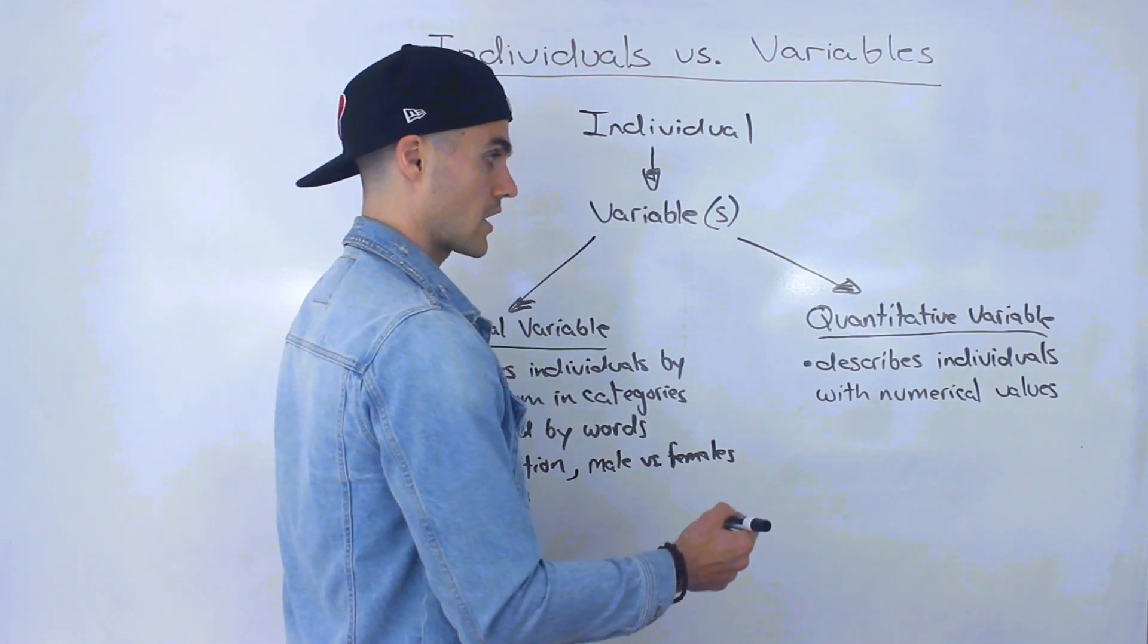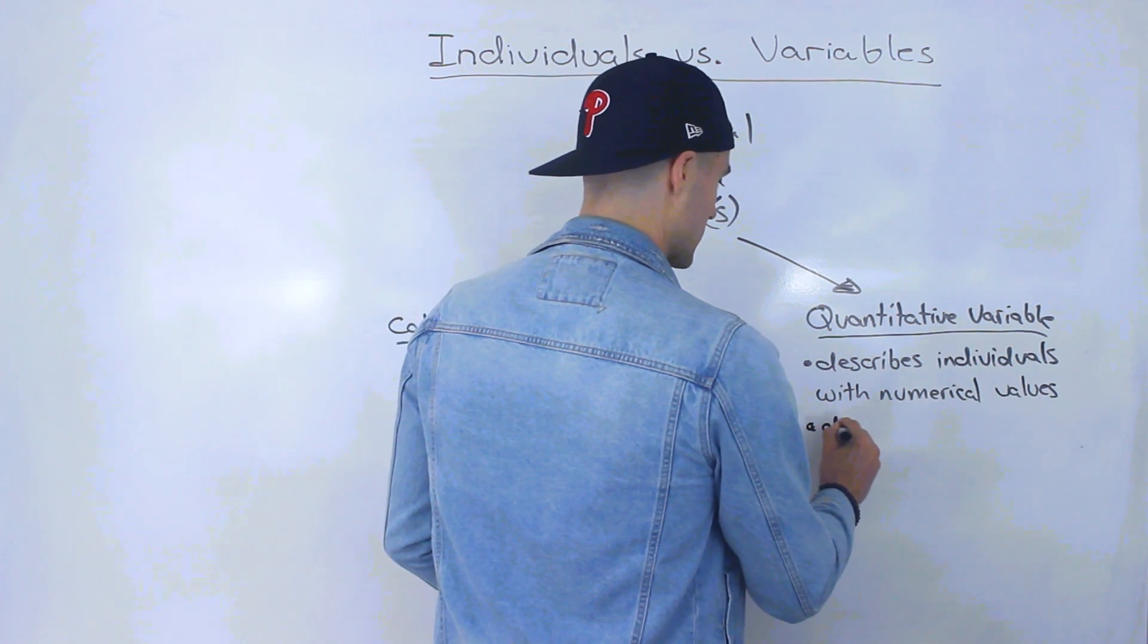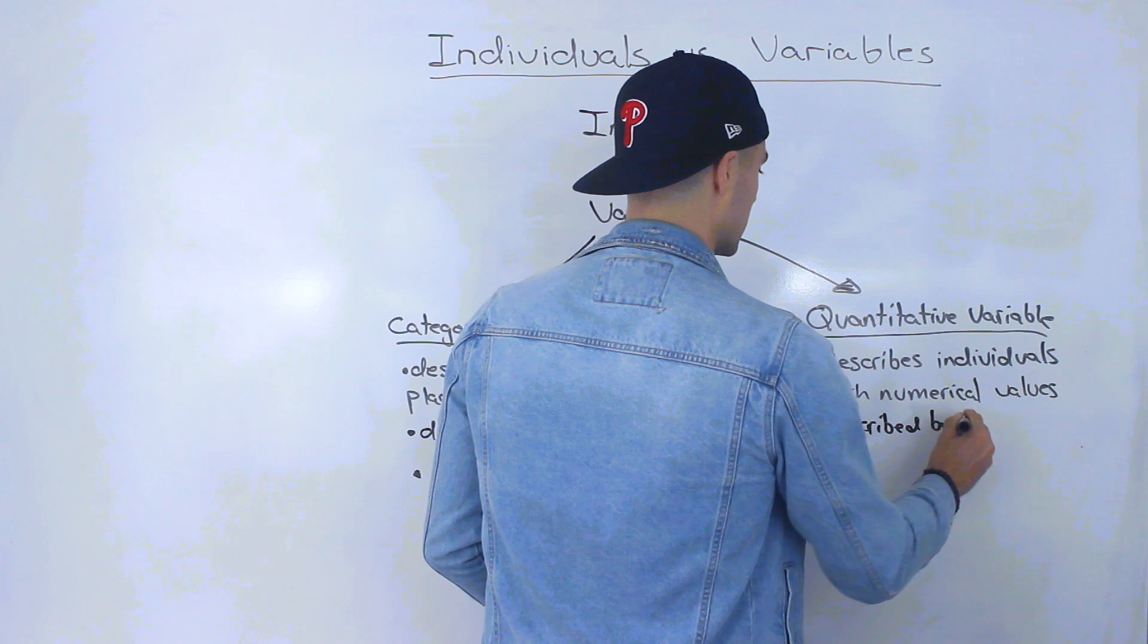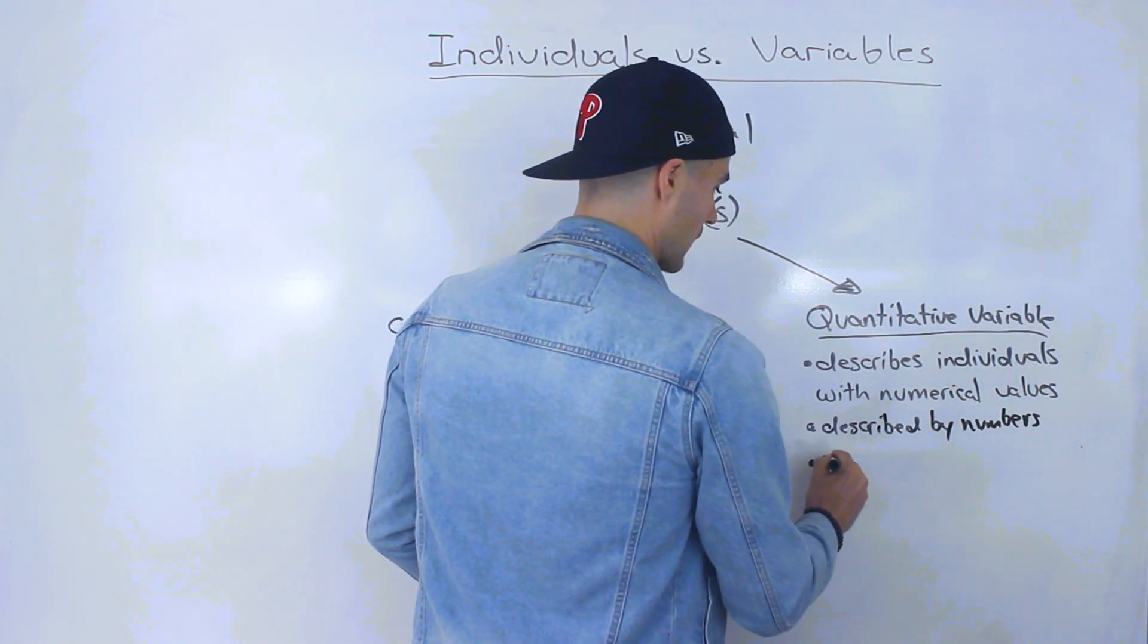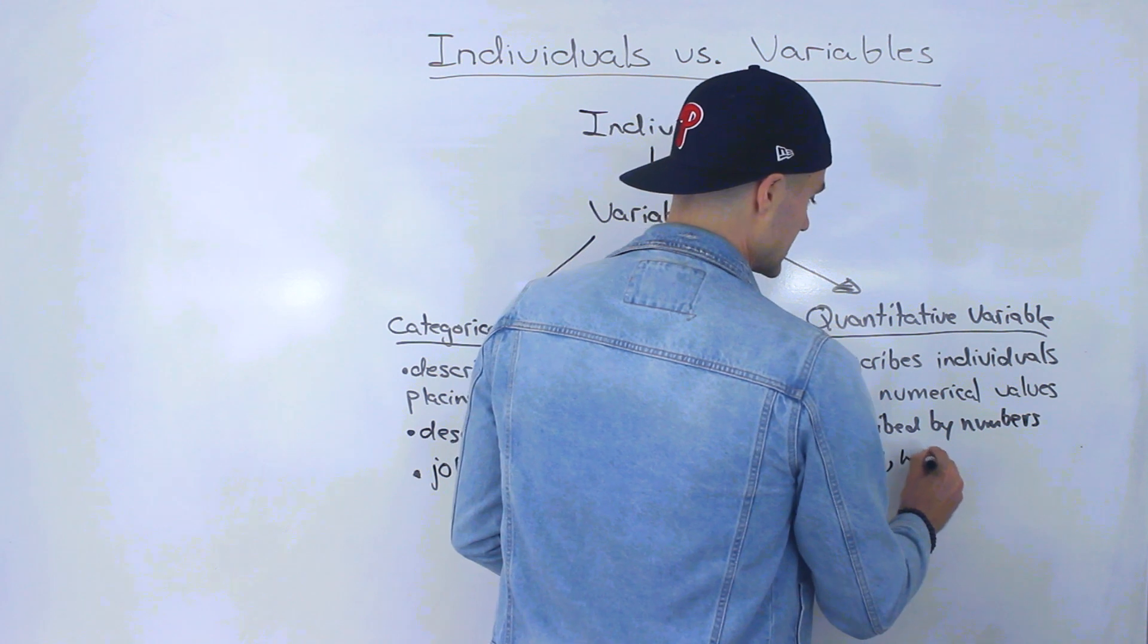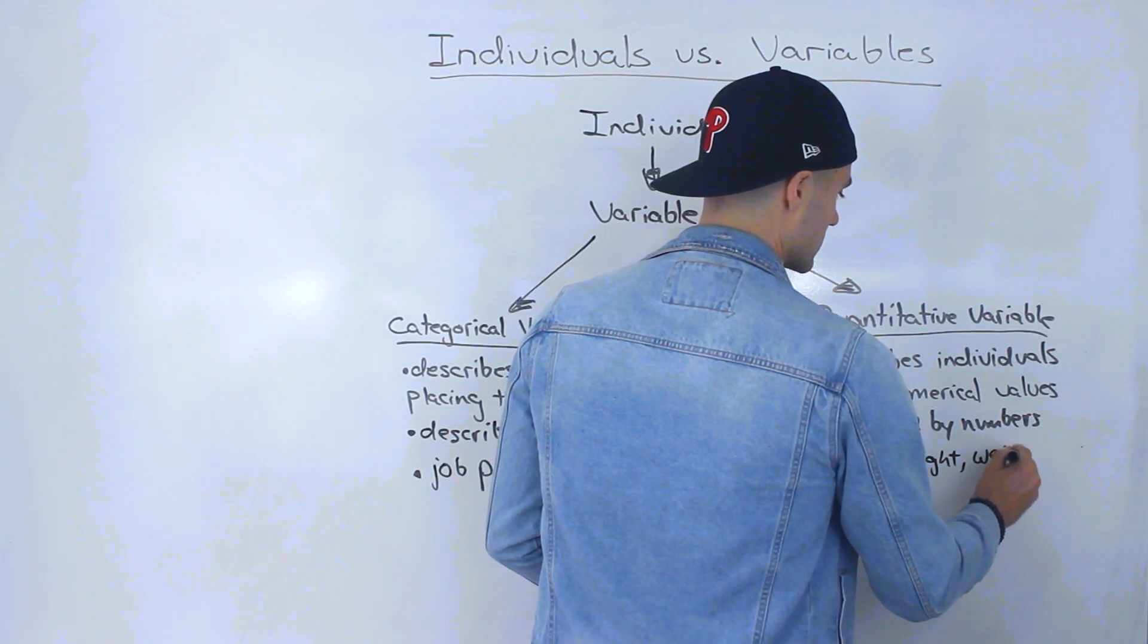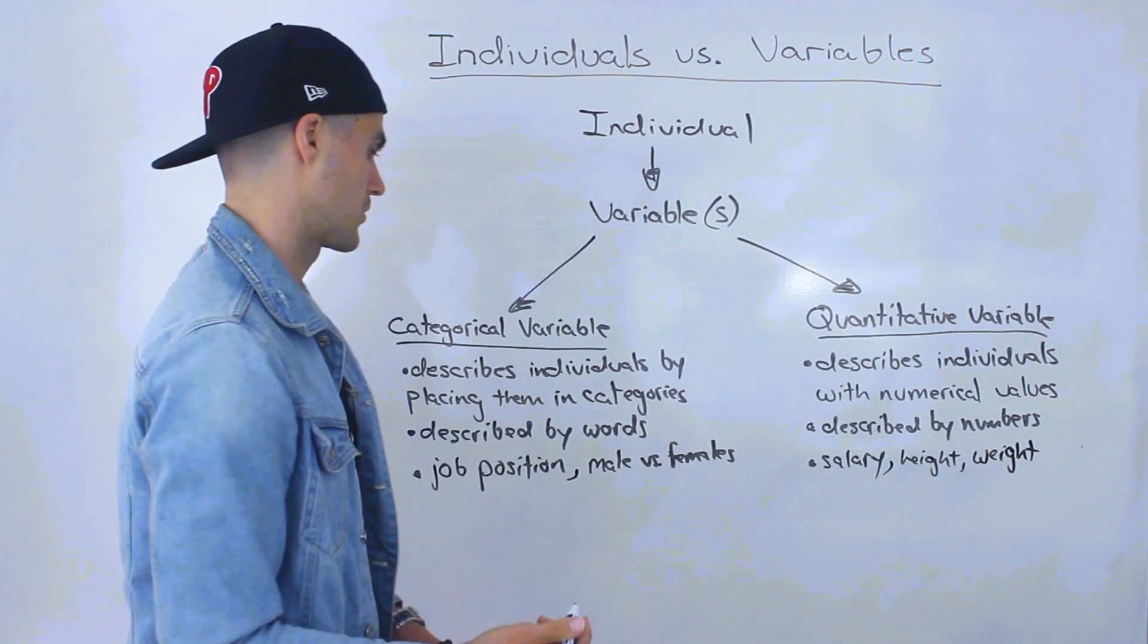While quantitative variables, they describe individuals with numerical values. So usually they're described by numbers. So in our previous example, that was the salary. That was the quantitative variable. Other examples can be like height, weight, characteristics that can be described by numbers.